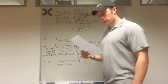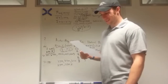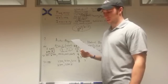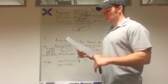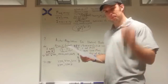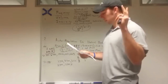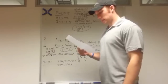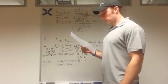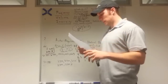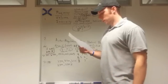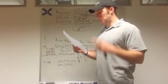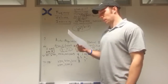Number one: what are the relationships between frequency, intensity, and volume, and how can you manipulate these variables in programming for different goals such as strength, hypertrophy, while cutting, bulking, and so on? Number two: what are your thoughts on auto-regulating volume and intensity as a natural bodybuilder? Wouldn't it trend you towards doing less volume and intensity when you're having a shitty day, and doing more when you are feeling beast mode and having a good day in the gym?